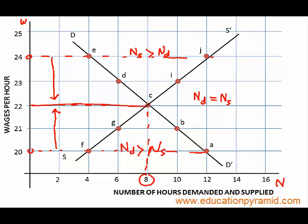The equilibrium wage level is the stable point. If there is any movement away from this equilibrium position, the forces in the market — demand for labour and supply of labour — will react in such a way that they push wages back towards the equilibrium wage level. Here the equilibrium wage level is 22, and at this point demand for labour equals supply of labour.